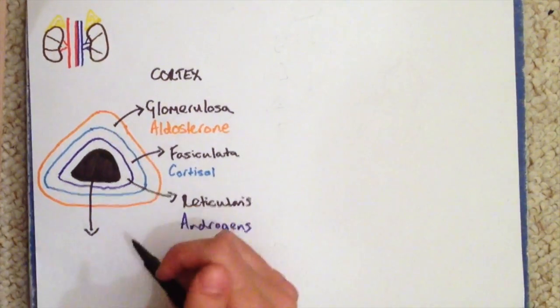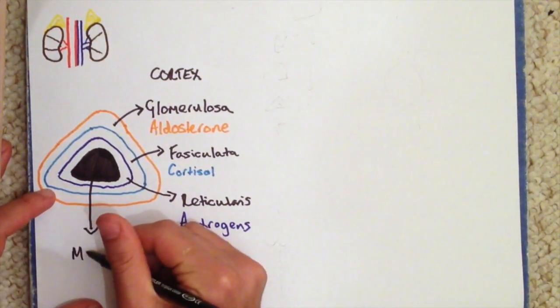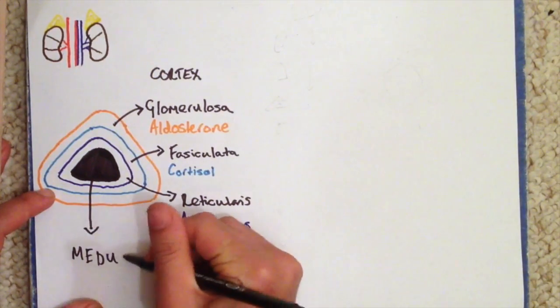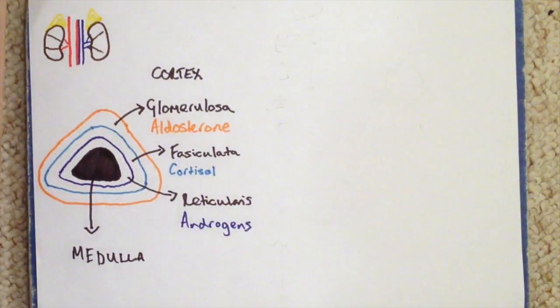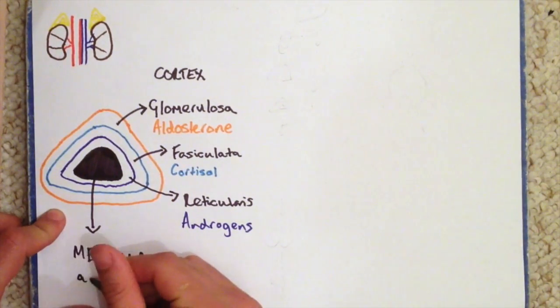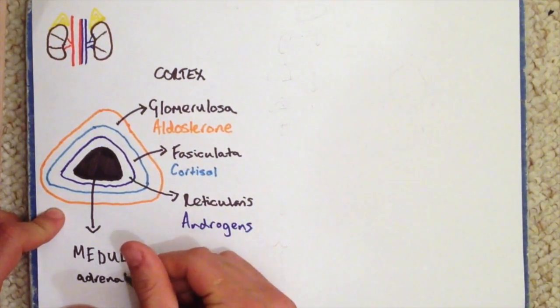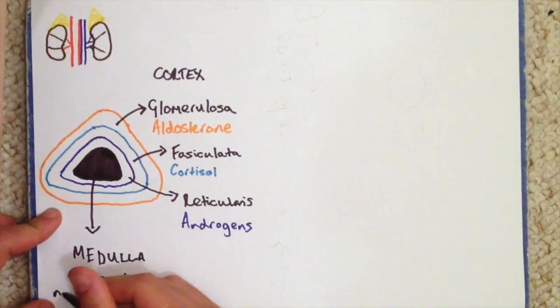The medulla secretes adrenaline and noradrenaline. An easy way to remember which is which is that the medulla is in the middle of the adrenal glands and the cortex is on the outside of that.